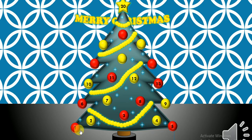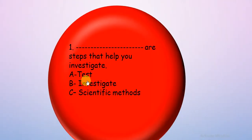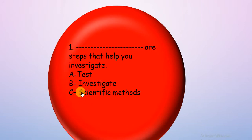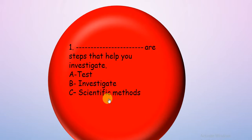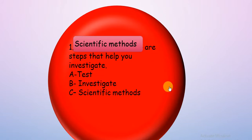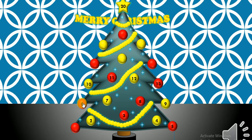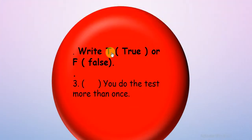Let's start with number one: choose the correct answer — what are steps that help you investigate? When I see 'steps,' I know it's the scientific method. They both start with S! Steps — it's the scientific method, which is a set of steps that help me answer questions or investigate. So the answer is scientific method.